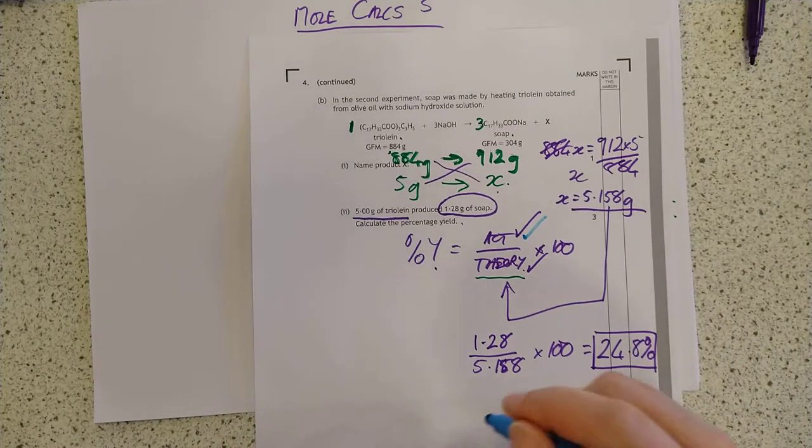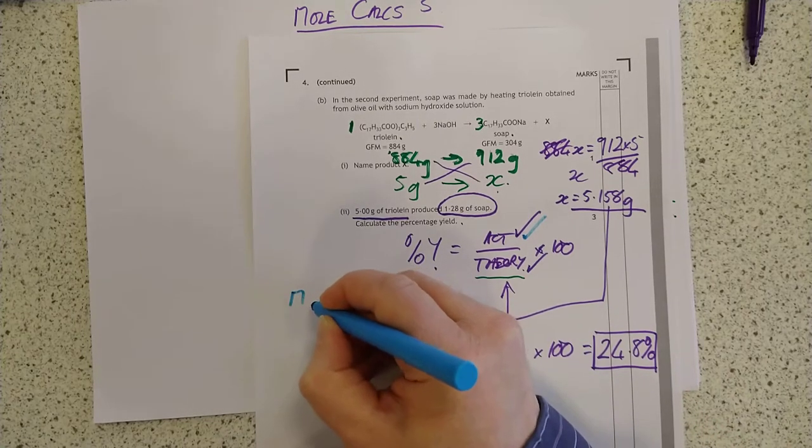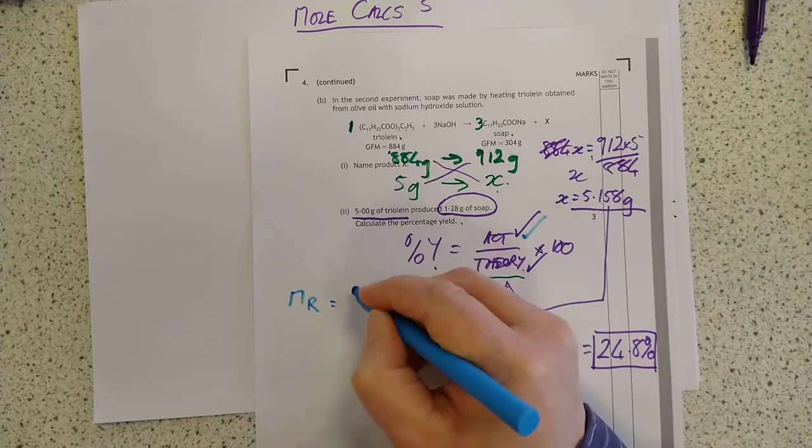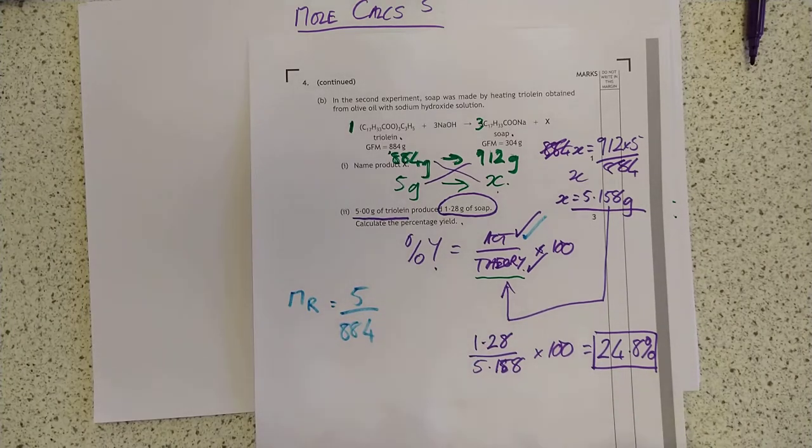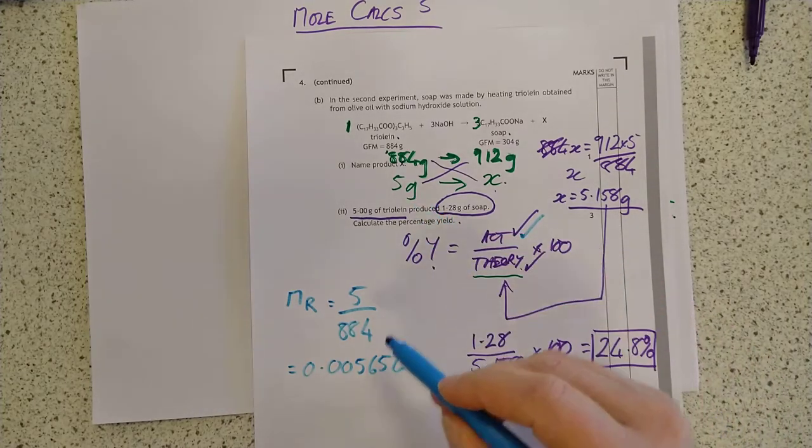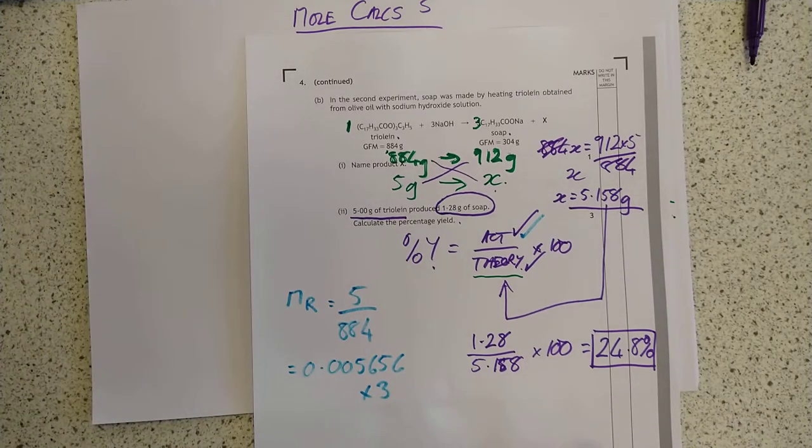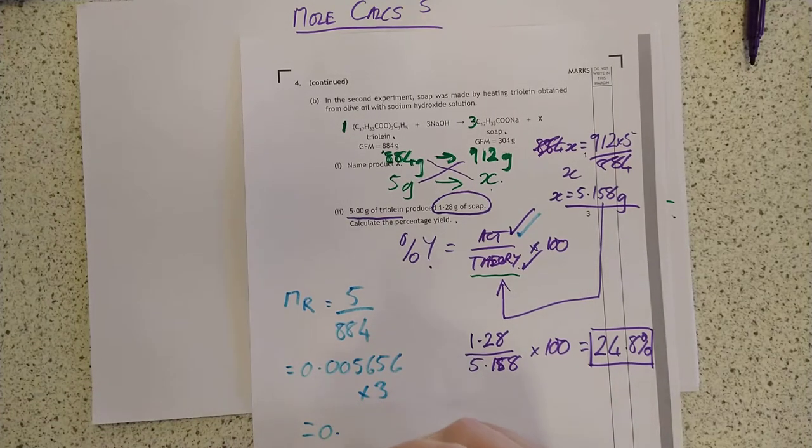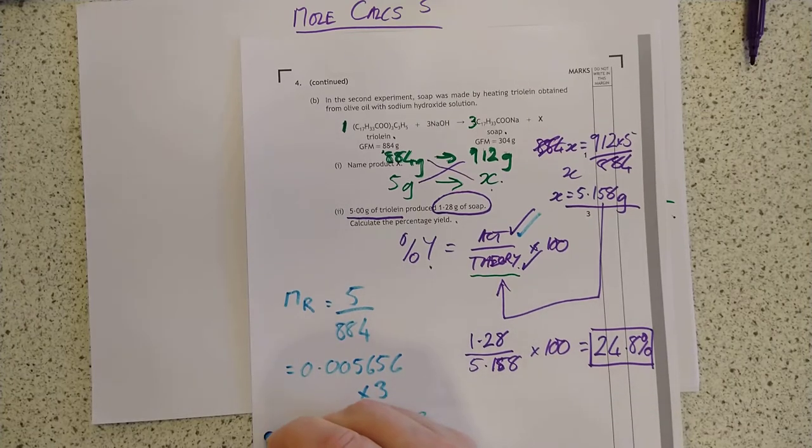Let's go back to 1 to 3 ratio here guys. What I'll do now is work out how many moles of triolein we actually started with. Moles of reactant equals the mass of reactant which is 5 divided by the GFM which is 884. To turn it into the moles of product we look at the mole ratio which is 1 to 3. So multiply this by 3, giving 0.016968 moles of product.